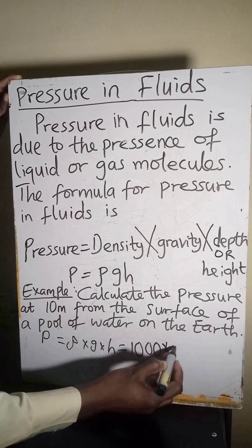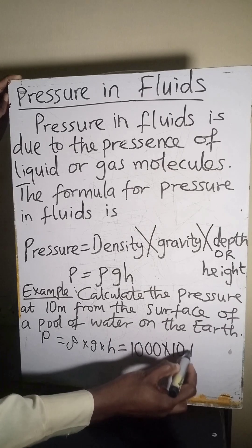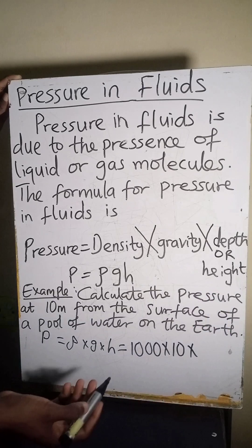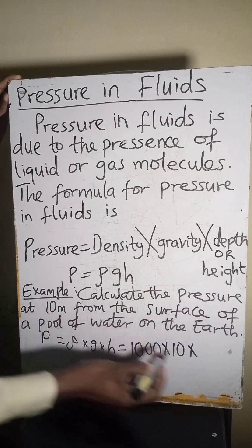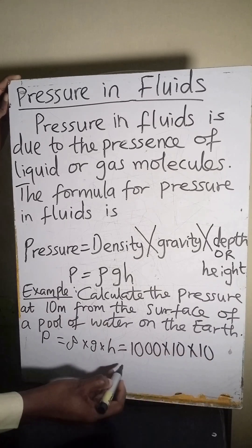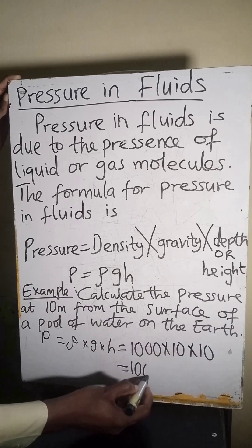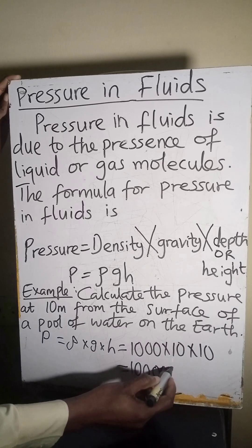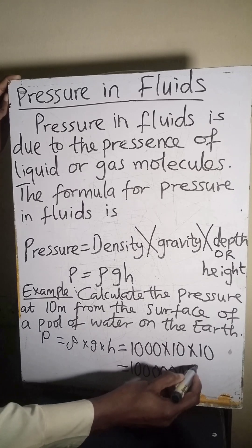What is gravity on the earth? Gravity on the earth is 10 meters per second squared. What is the height or what is the depth? The depth is 10 meters from the surface. Hence, 1000 times 10 times 10 will give you 100,000 Newton per meter.